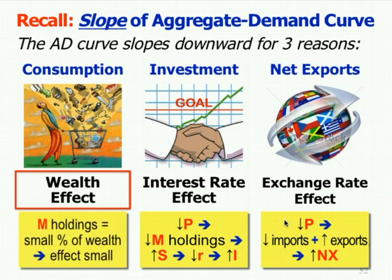First, the wealth effect: as prices go down, the value of your money holdings goes up, so you have more cash in your wallet and checking account. You can move it to savings or spend it — part of that gets spent on consumption, increasing it. That's the wealth effect, explaining why lower prices equal increased aggregate demand. However, money holdings as a percentage of your wealth — relative to real estate, stocks, bonds, retirement, and savings — are a small percentage. So the wealth effect does contribute to the downward slope of aggregate demand, but it's relatively small.